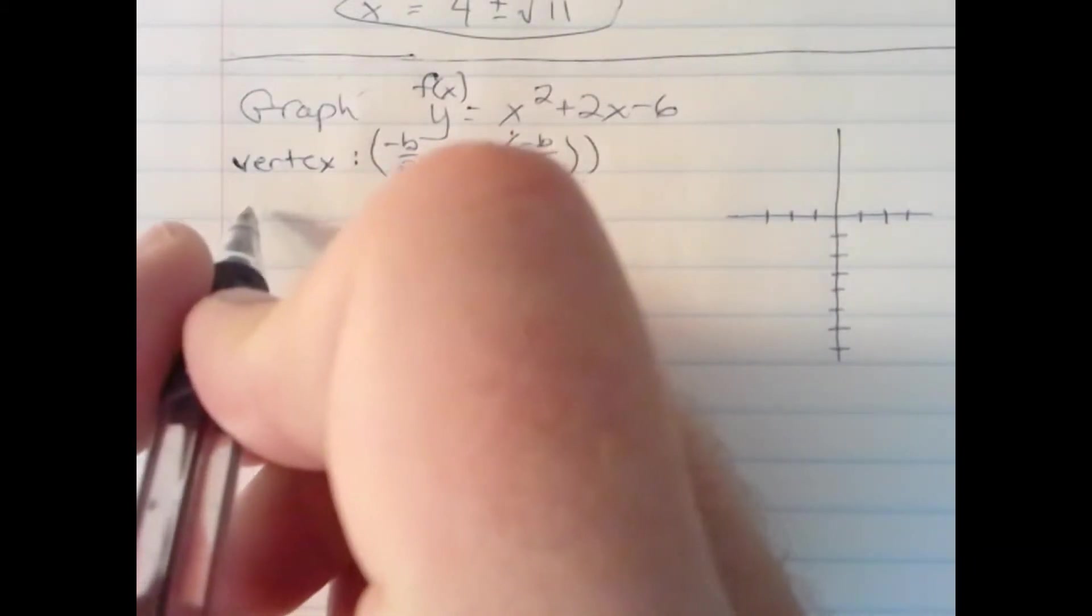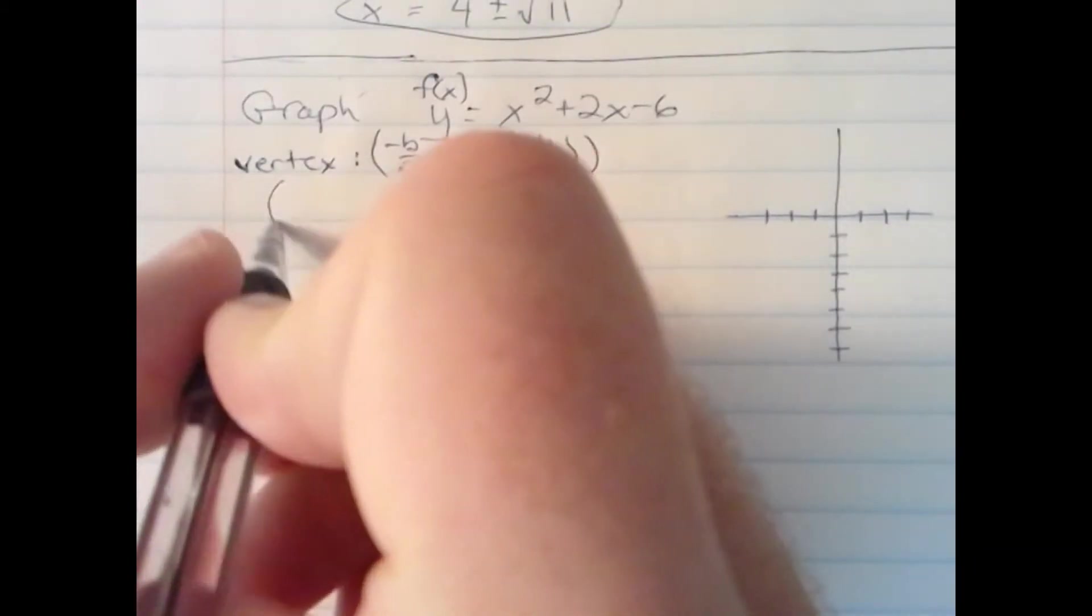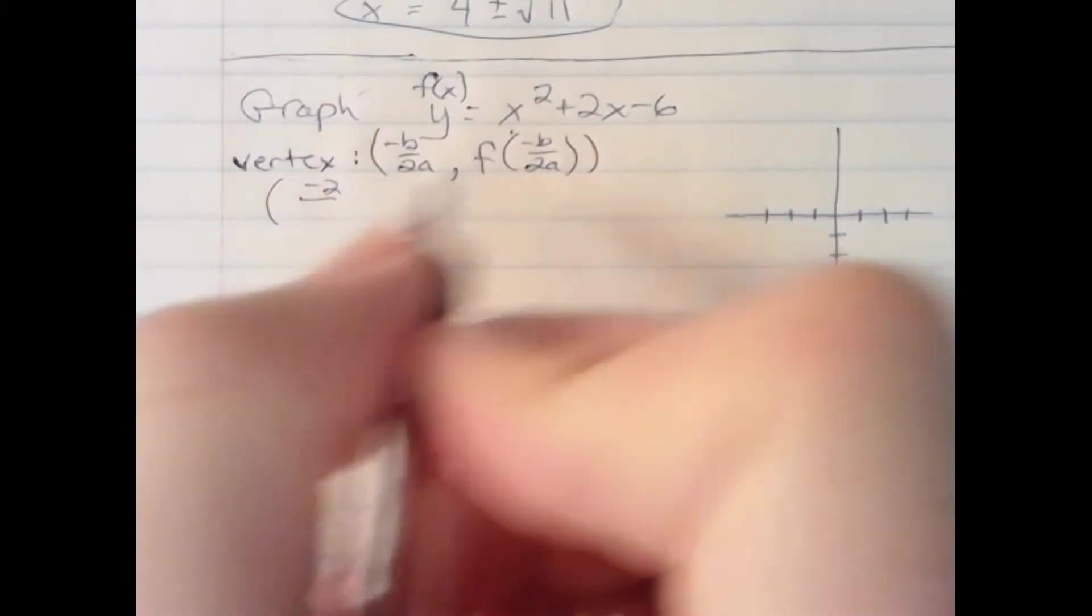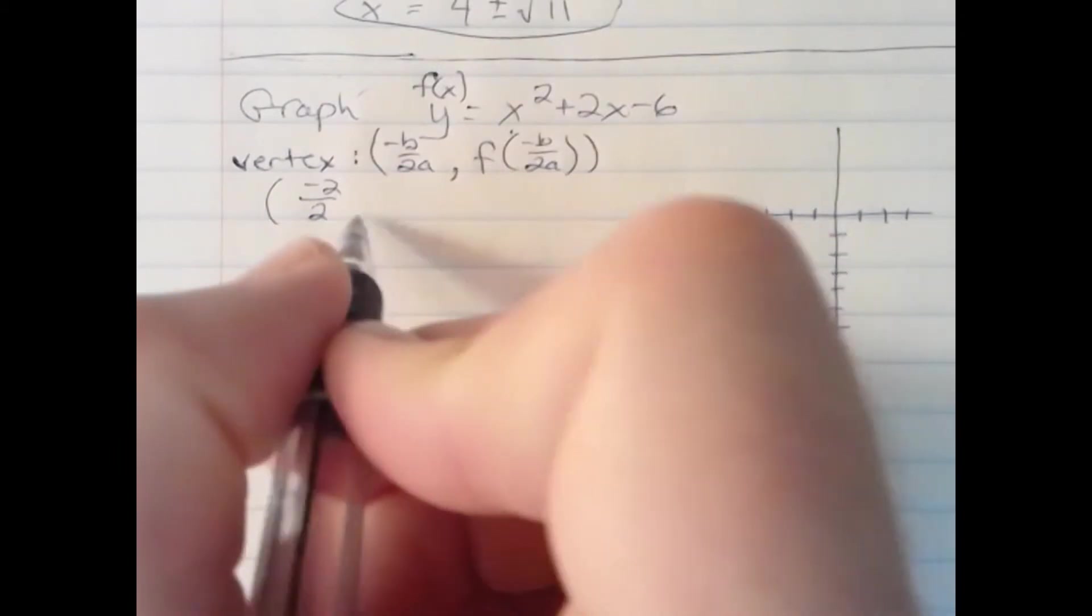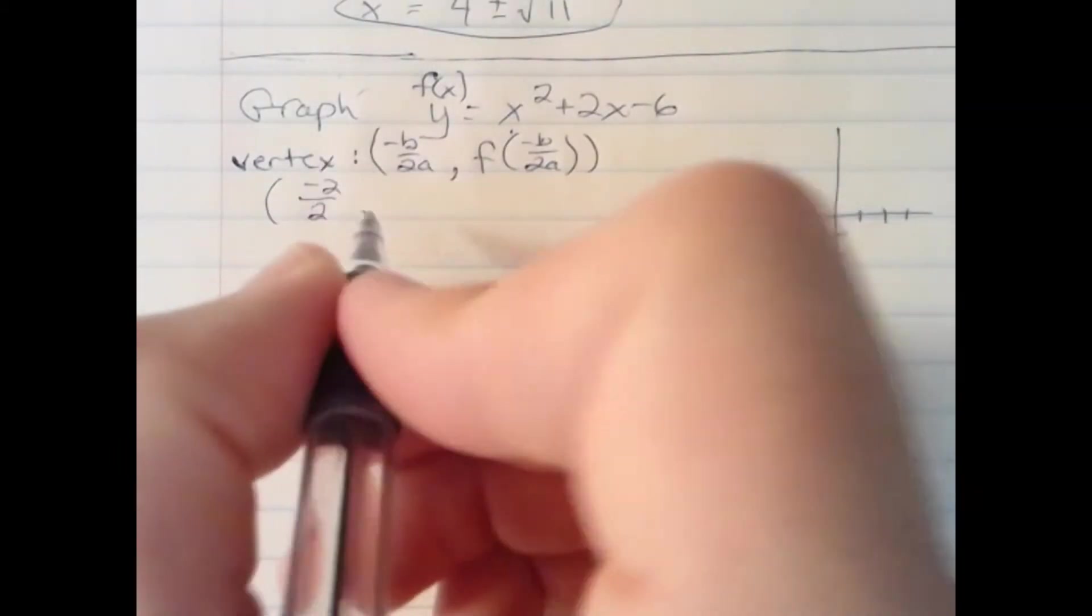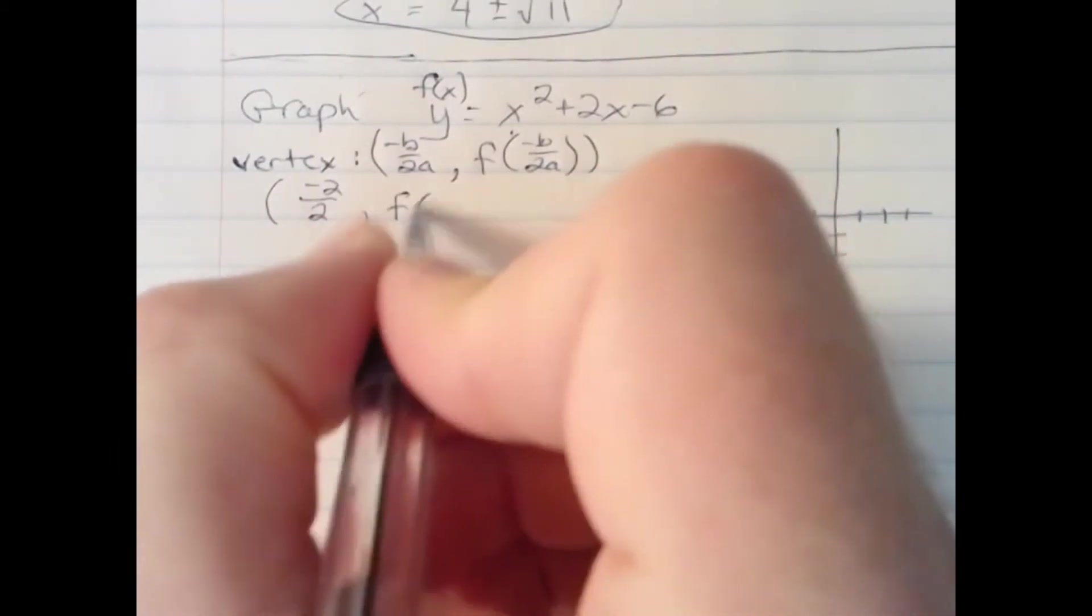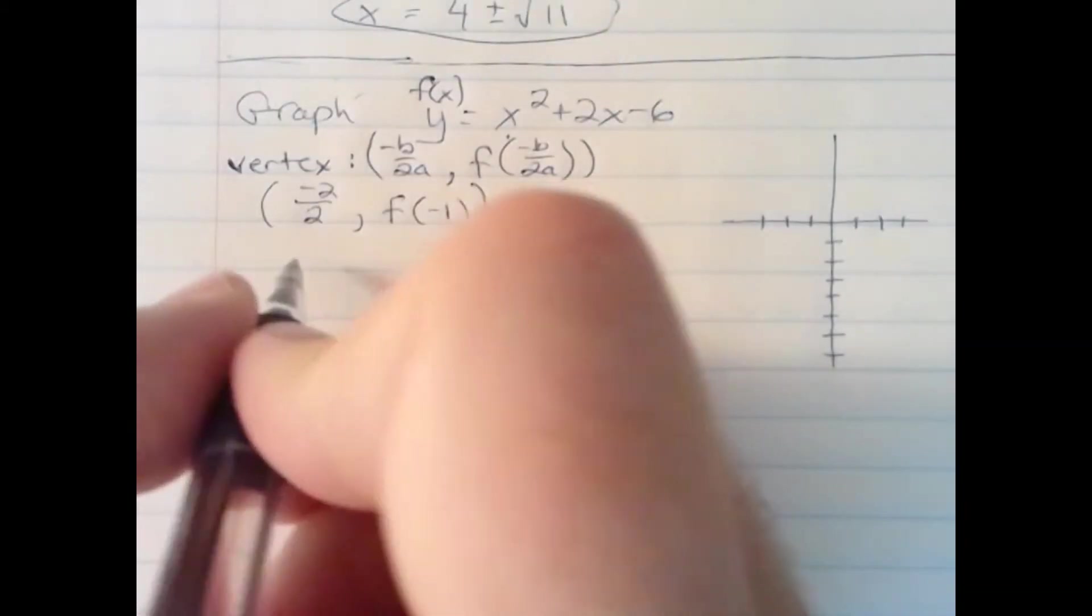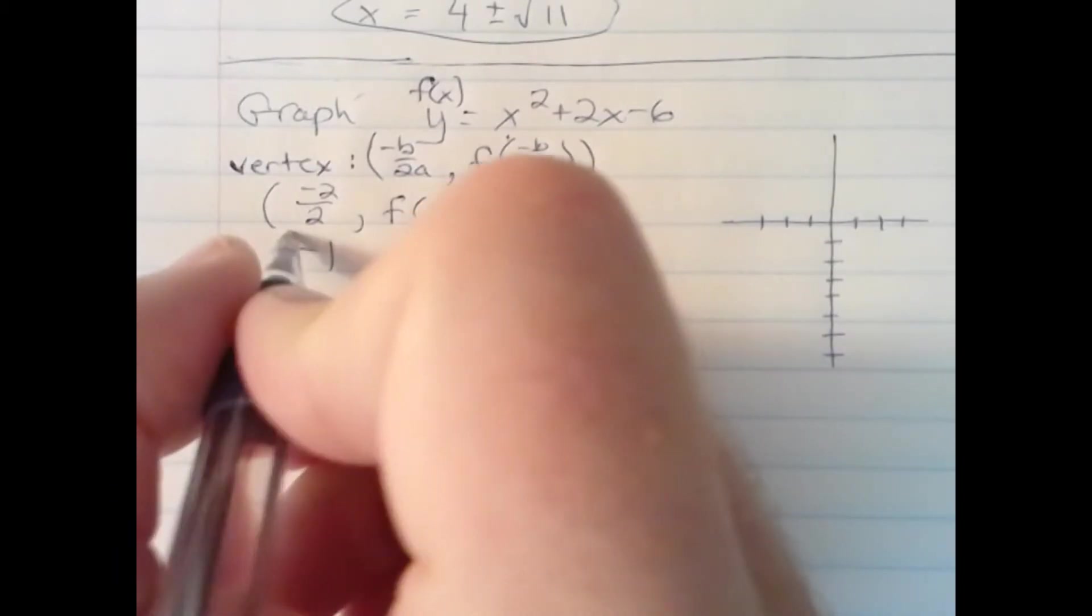So in this problem, our x-coordinate is negative 2 over 2 times 1. This reduces to negative 1, so I will then in turn be finding f of negative 1 for the y-coordinate. So here we are, negative 1. We have that established.